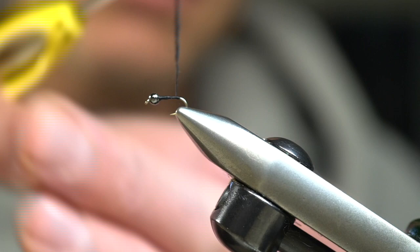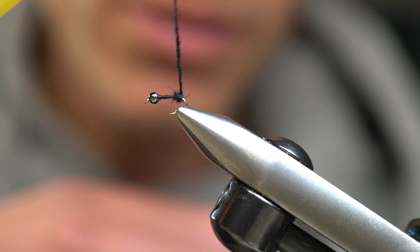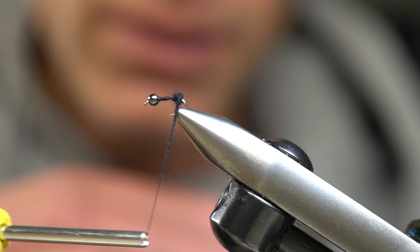These guard hairs will kind of start popping out, giving it a little more meaty, natural look, almost like a wounded ant pattern with mangled legs. To get this ball of dubbing, we're just going to make a series of figure eights basically on top of itself.